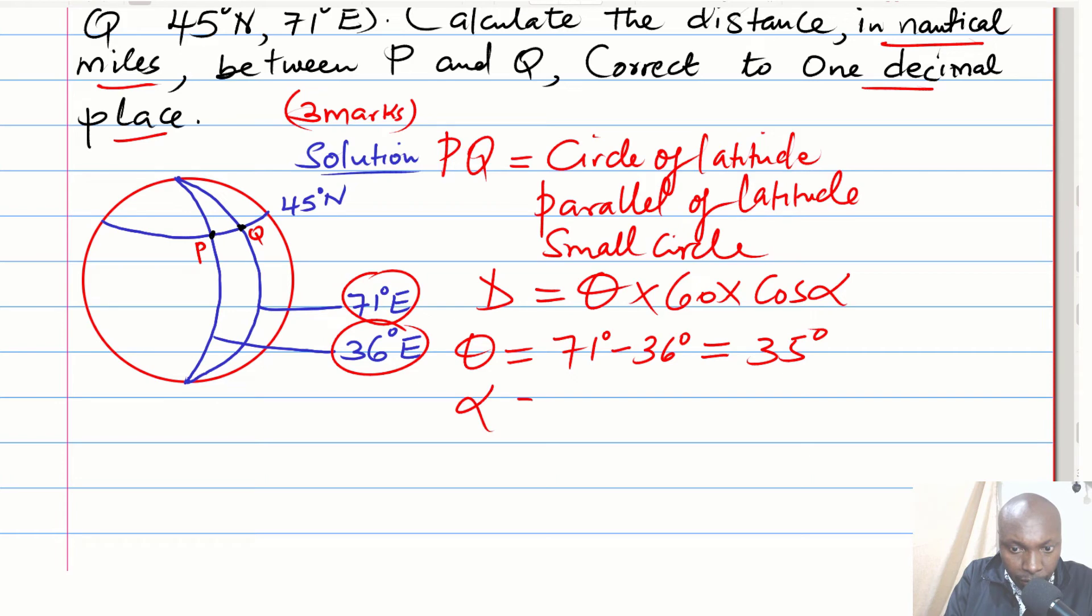The latitude angle, which is alpha, is 45 degrees. That is the latitude along which these two points lie. You can see the two points are lying on the same latitude, which is 45 degrees north.